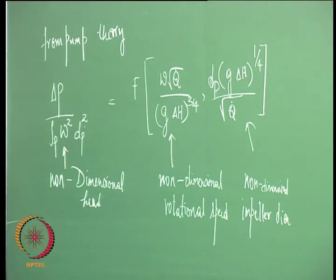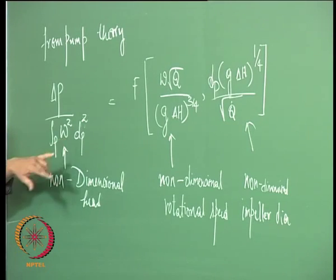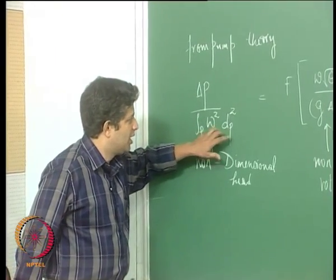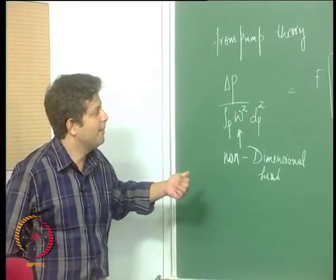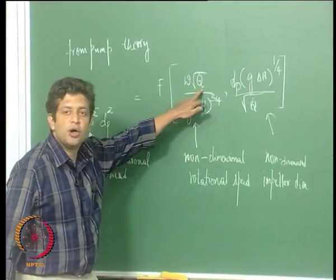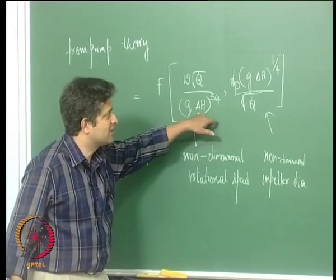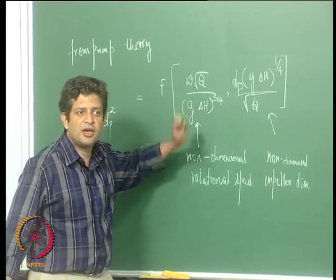Now if you see here, this comes from the Buckingham Pi theorem which you must have studied sometime in your undergraduate studies. The rho_p here corresponds to the density of the fluid, omega corresponds to the rotational speed in RPM, and d_p corresponds to the diameter of the impeller. Q-dot is the flow rate and delta H is the actual head rise. G is acceleration due to gravity.